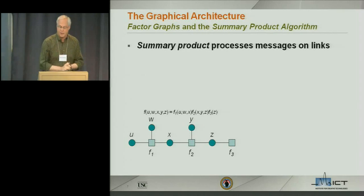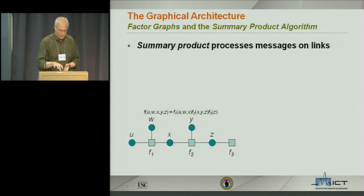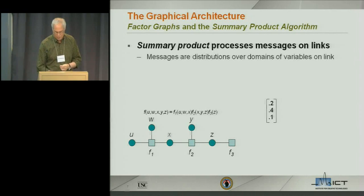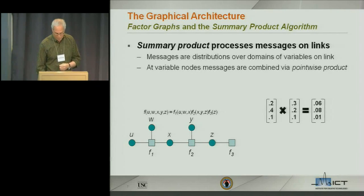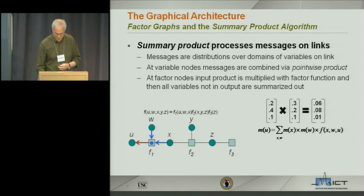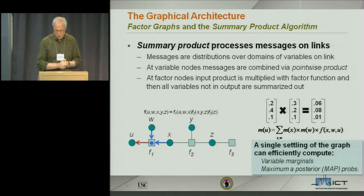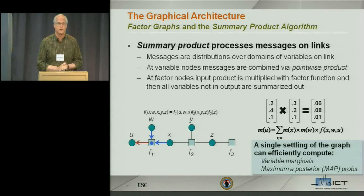The memory architecture is based on factor graphs — the most general form of graphical models known — plus the summary product algorithm, which processes messages on the links. Messages are distributions over the domains of variables; they get combined by piecewise products, then you sum out variables you're not concerned with. A single settling of a graph can generate marginals on all variables in the graph, or map probabilities.